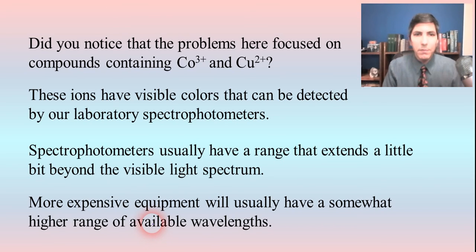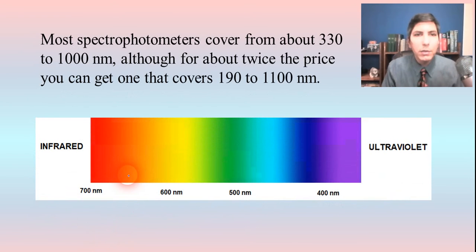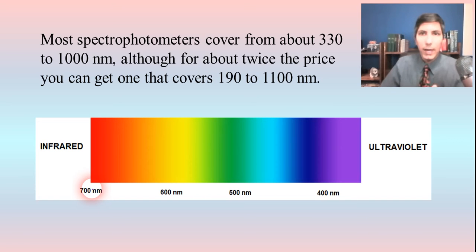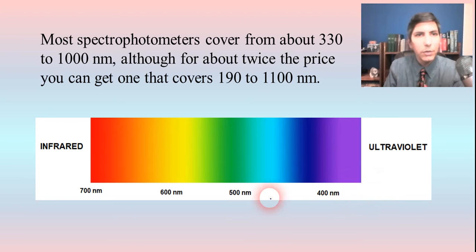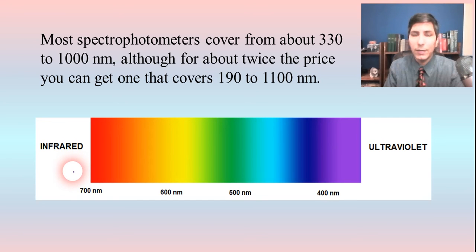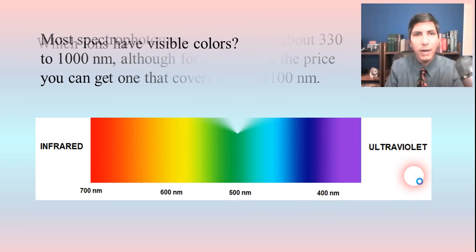Most spectrophotometers have a range that goes a little bit beyond the visible spectrum — roughly 400 to 700 nanometers. Most lab instruments go from about 330 nanometers up to about 1,000, which actually runs into the infrared. If you go up in price, you can increase your range, maybe getting all the way down to about 190 nanometers and up a little bit higher than 1,000.